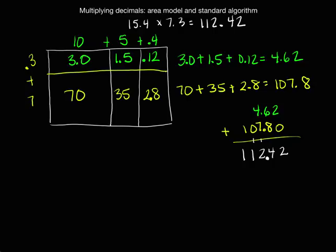Now let's go ahead and look at this with the algorithm. We'll write our first factor, 15.4, and we will multiply that by our 7.3. When we're writing the algorithm, we actually want to just write it as if we take the decimals away and write the numbers—the factors—as if we were just doing any multi-digit multiplication problem.